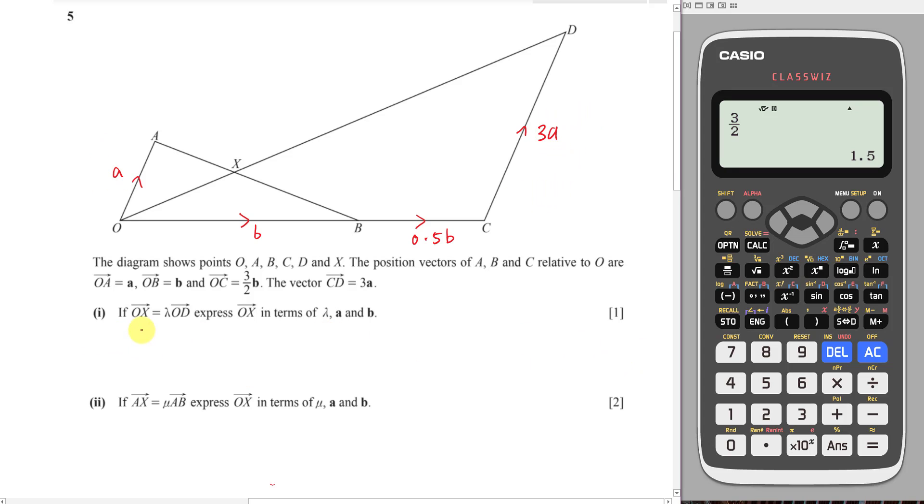Alright, the first one is one mark only. They ask you to express OX, since OX equals lambda OD. So OX equals lambda times what is my OD? O to D is basically OC plus CD, which is 1.5B or 3 over 2B, plus CD is 3A. Just like that, done.